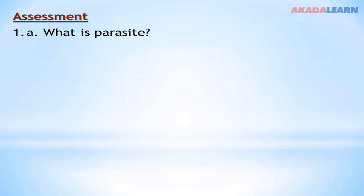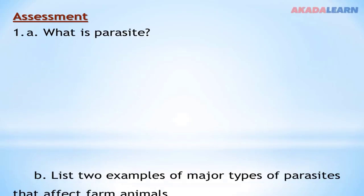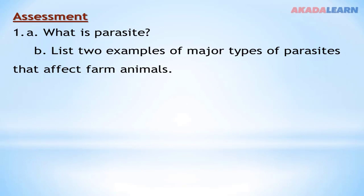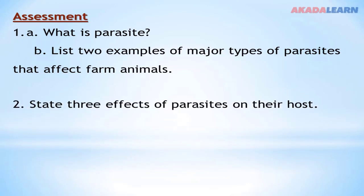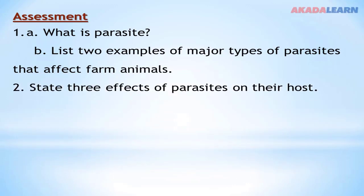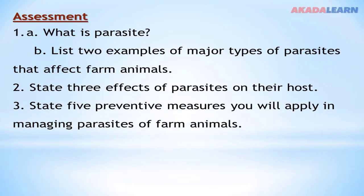Let's look at the assessment. Number one: What is a parasite? List two examples of the major types of parasites that affect farm animals. Number two: State three effects of parasites on the host. Number three: State five preventive measures you will apply in managing parasites of farm animals. If you have problems answering this assessment, go back and listen to the video properly, and I believe you will do better. Thank you for being on this platform.